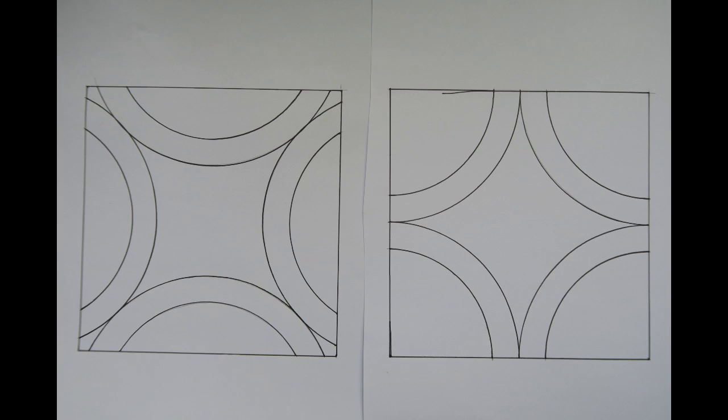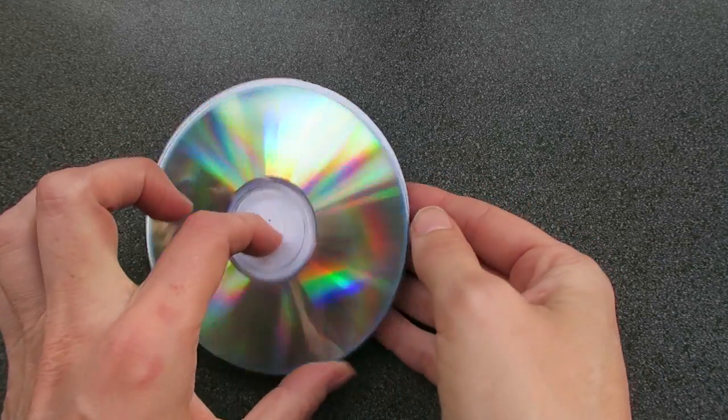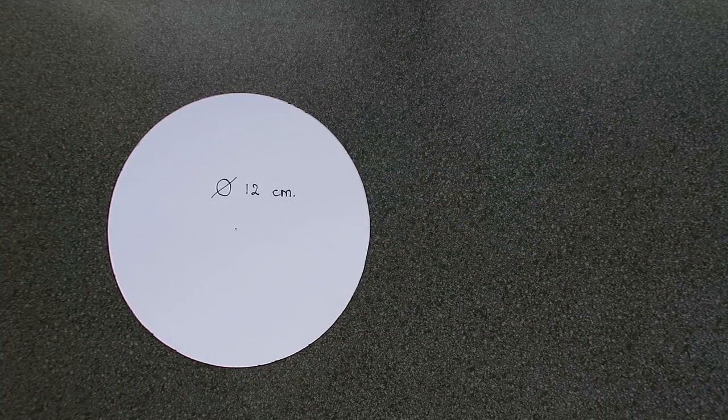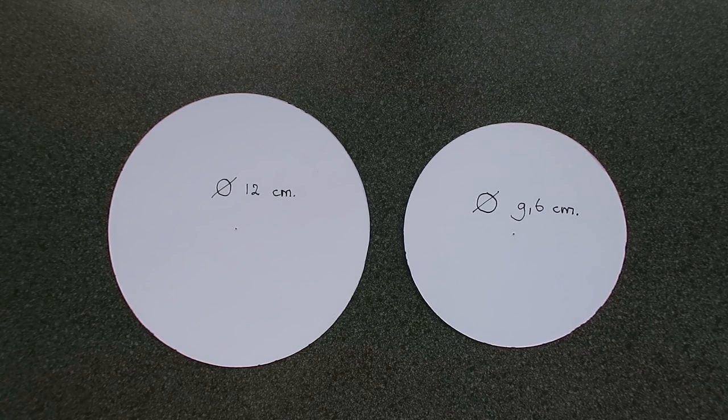And these are the models you need to make YAMP. The base is the size of a CD, diameter of 12 cm, and there's another circle, diameter of 9.6 cm.